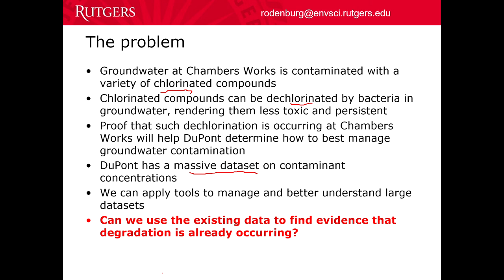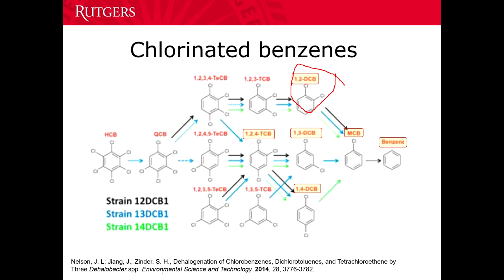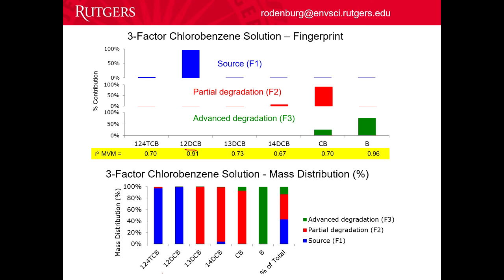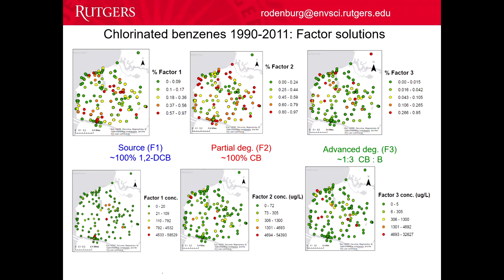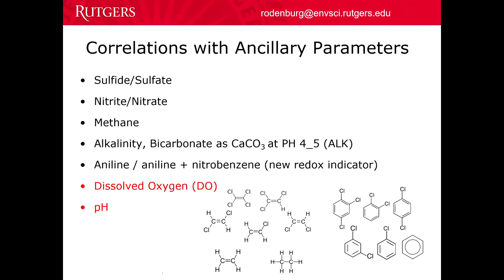Looking at the chlorinated benzenes: the main one used at the site was 1,2-dichlorobenzene (ortho-dichlorobenzene). It can be dechlorinated to monochlorobenzene and to benzene. There was also a little bit of 1,2,4-trichlorobenzene at the site. We ran our PMF model and found a source term with 1,2-dichlorobenzene in it. Then we found a fingerprint with mostly chlorobenzene and 1,4-dichlorobenzene — that must be the degradation term. And then there's one with mostly chlorobenzene and benzene.